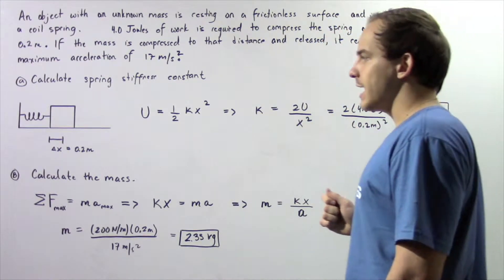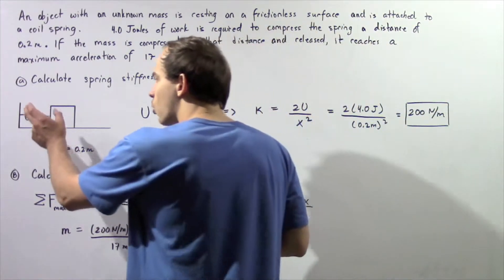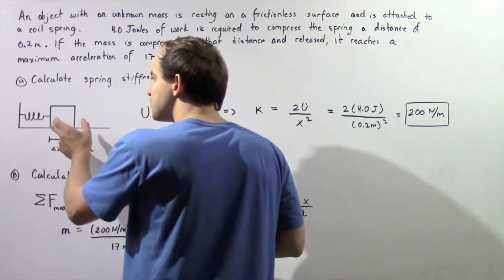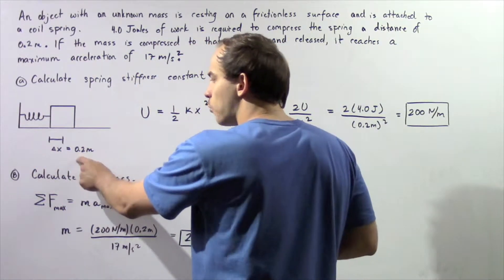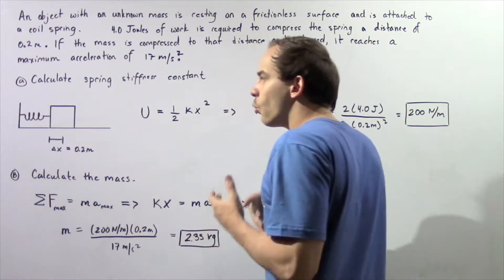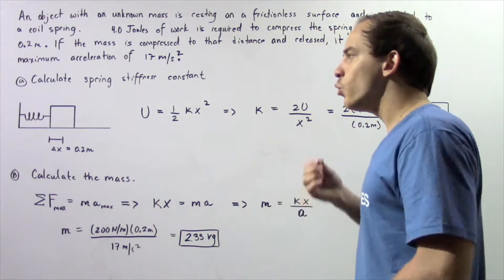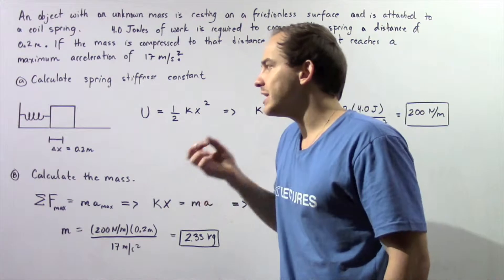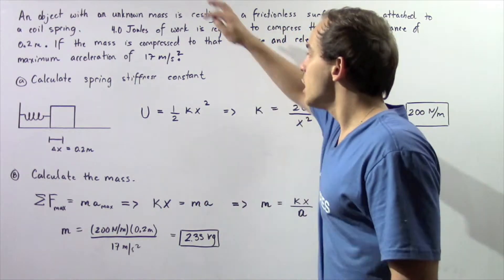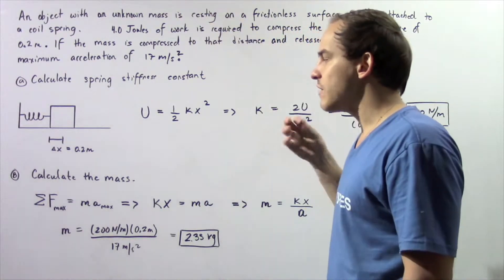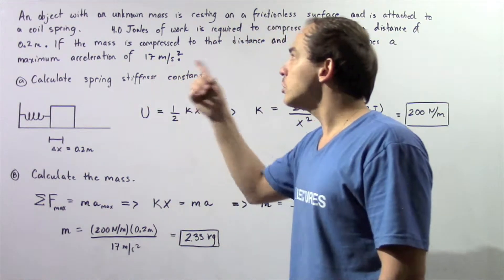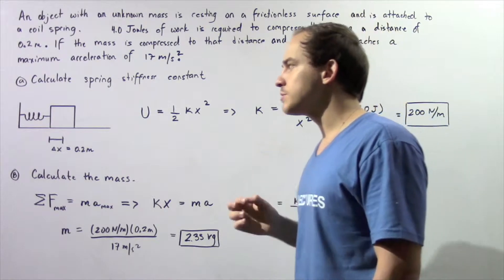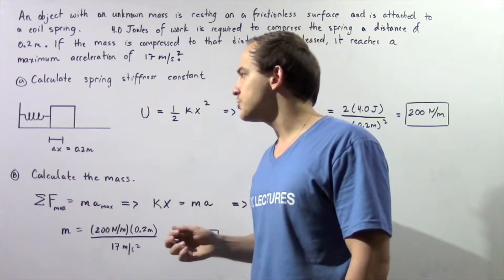Let's begin with part A. Suppose we have a coil spring attached to a mass and we compress that spring a distance of 0.2 meters. When we compress the spring, we do work on that spring. In other words, we transfer 4.0 joules of energy into that spring and now that spring stores 4 joules of energy in terms of elastic potential energy.